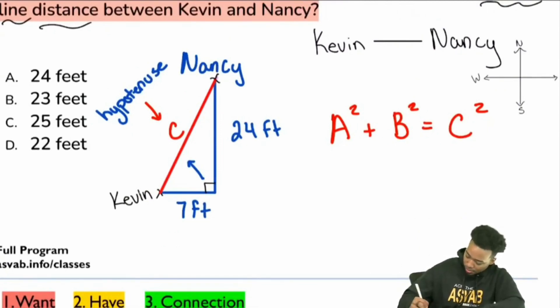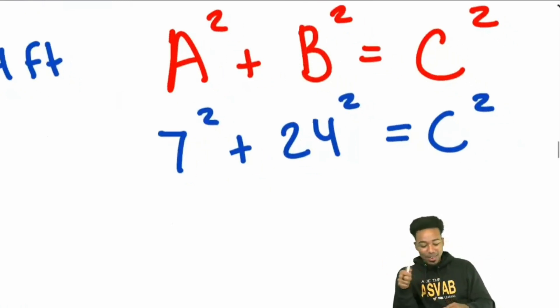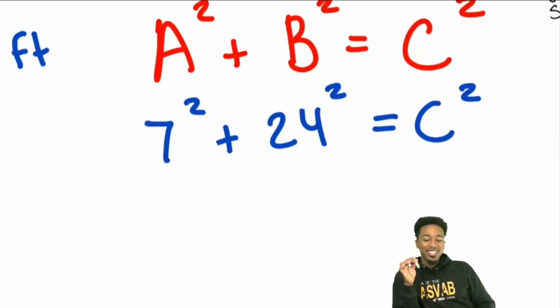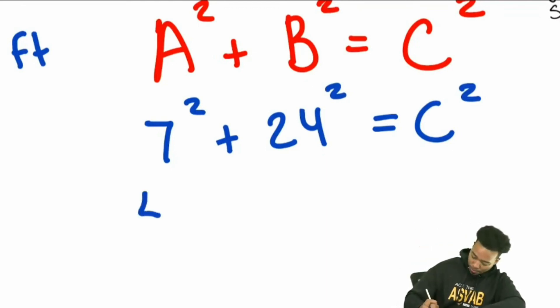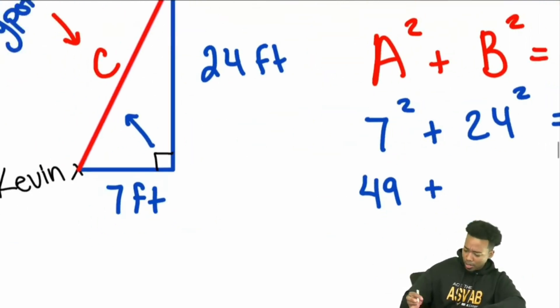So here we go. All we have to do is plug things in. We got 7 squared plus 24 squared is going to equal C squared. Is anybody here intimidated by the math that we're about to do? Having flashbacks of Vietnam right here. All right, here we go. 7 squared. Everybody hit me. What's 7 squared? 49, right? What does squared mean again as a reminder? Squared means take that number, multiply it by itself. 7 squared, that's 7 times 7. That's how we get 49.